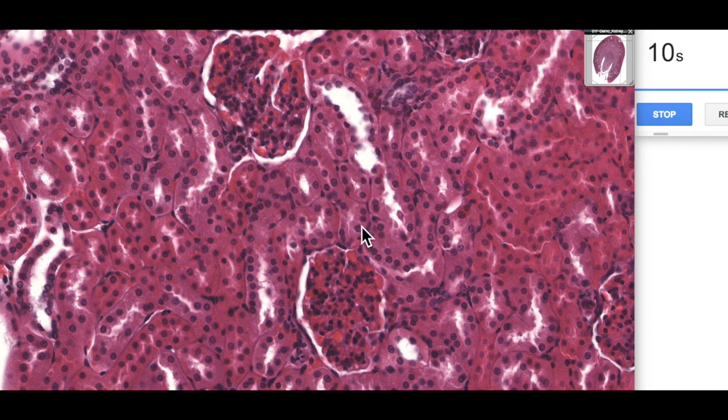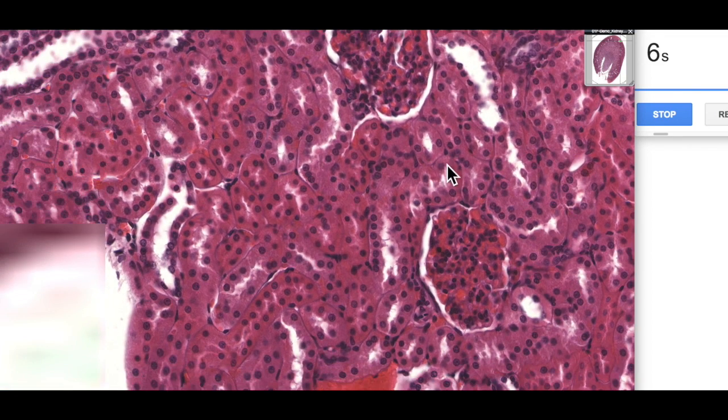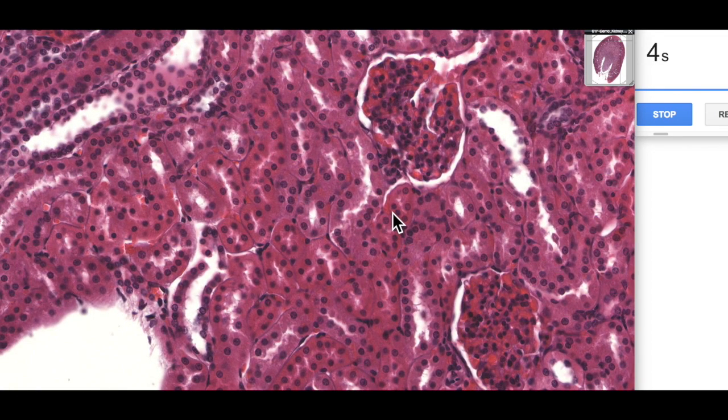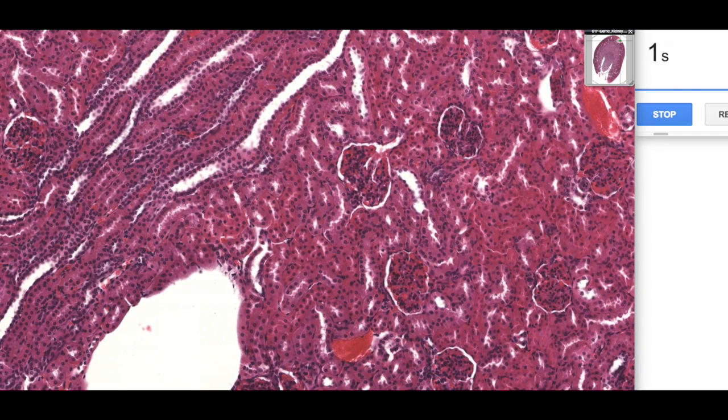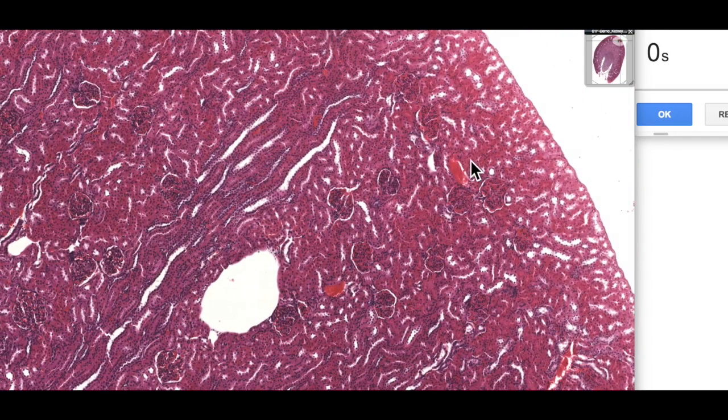Now interspersed in between them are peritubular capillaries and those are the major sort of take home low mag features of the cortical tissue. I hope you found that useful.